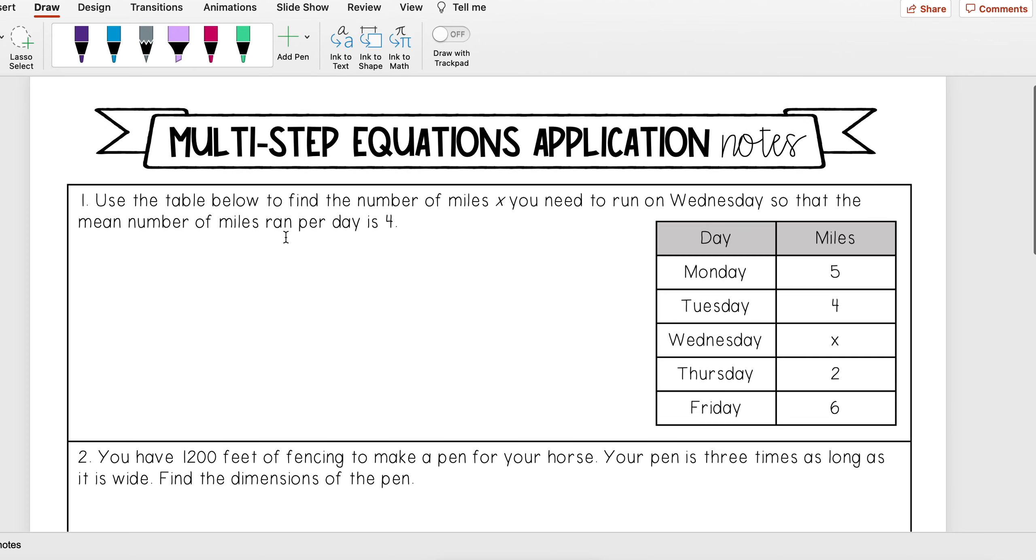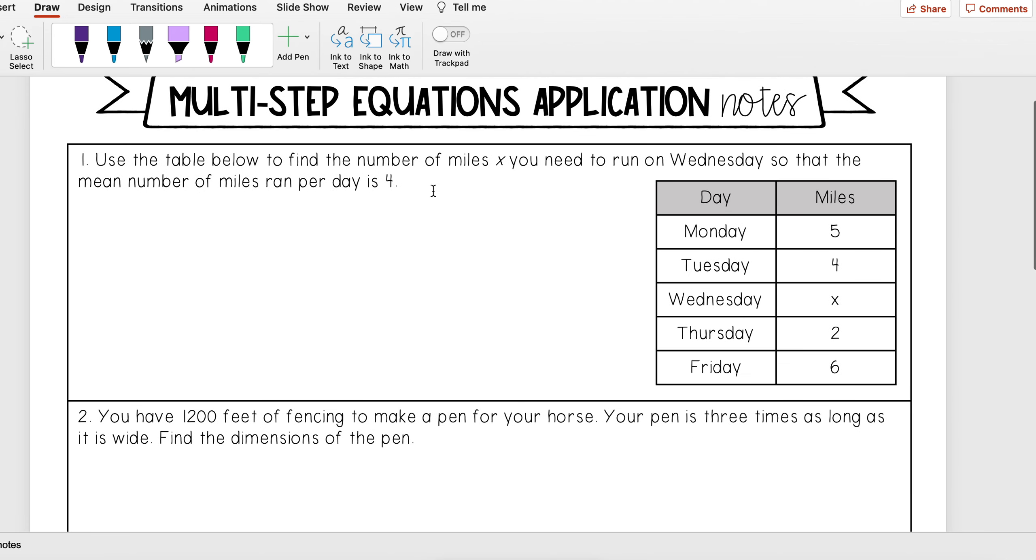For this first example, it says use the table below to find the number of miles x you need to run on Wednesday so that the mean number of miles ran per day is 4. We're given this table: on Monday ran 5, Tuesday ran 4, Wednesday we want to find out how many miles run, Thursday 2, and then Friday 6. And we want the mean number of miles to be 4.